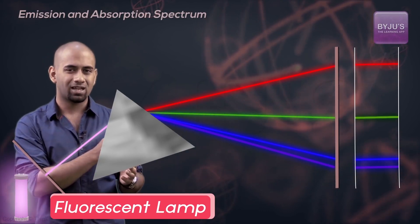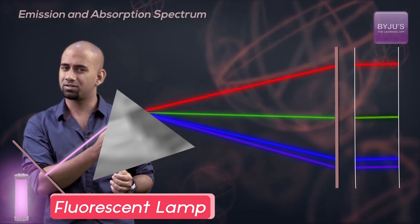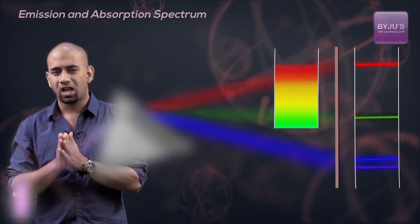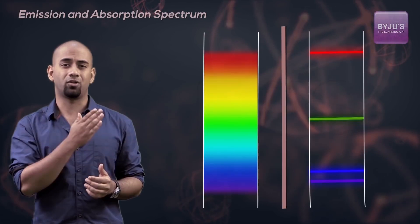On the screen I find only certain wavelengths or certain colors, but in the previous case I found a continuous spectrum of wavelengths or colors.